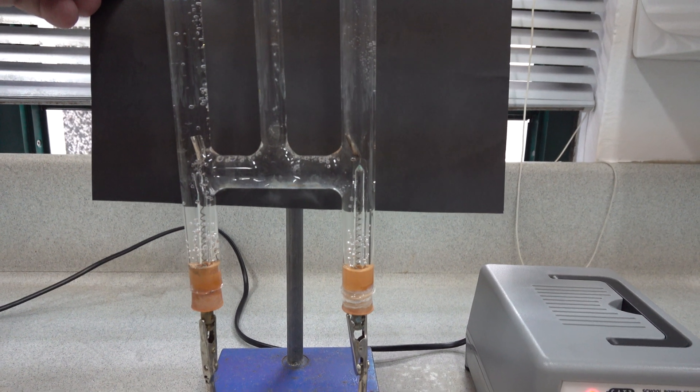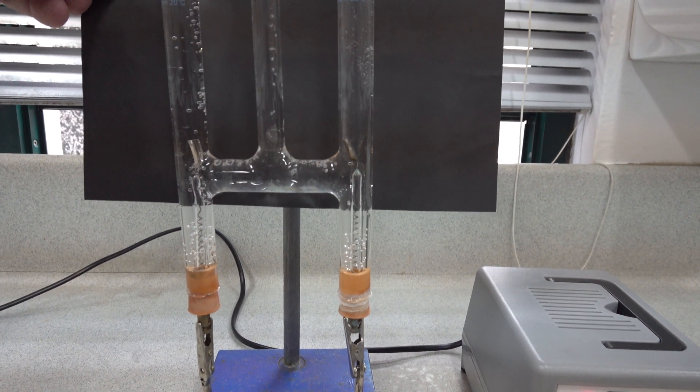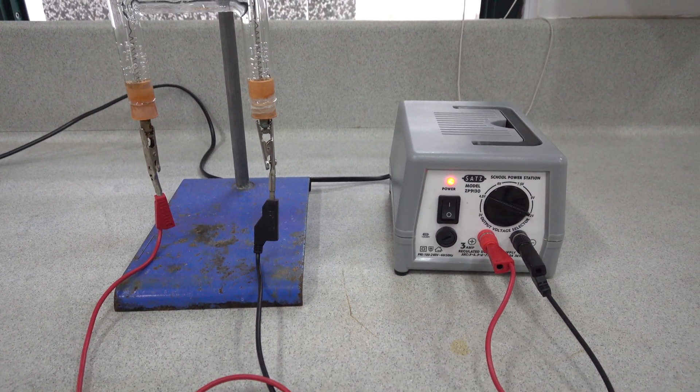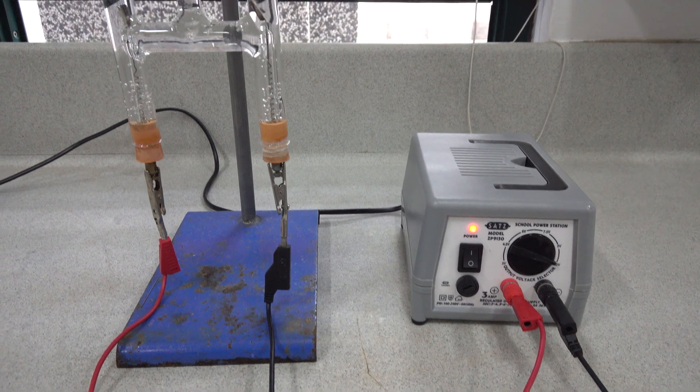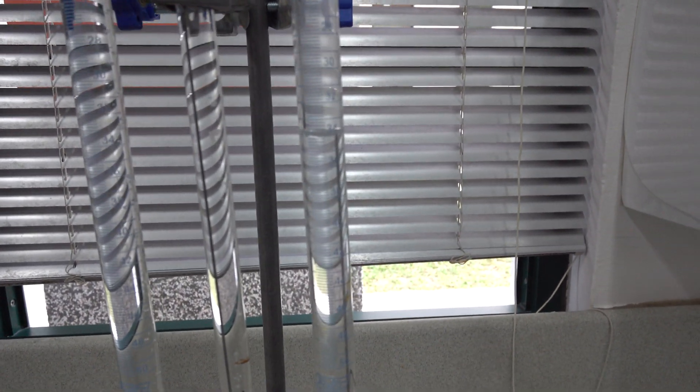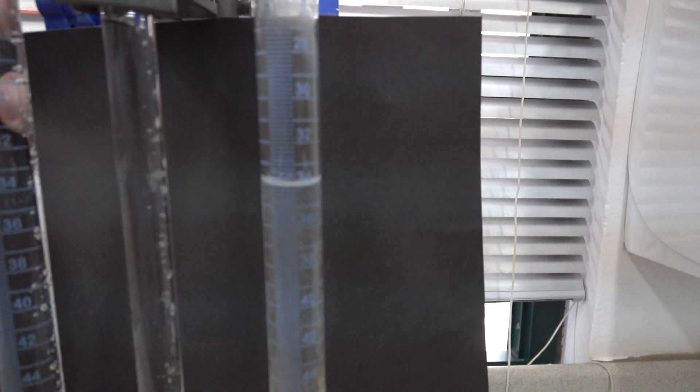We've got the cathode on the right and the anode on the left. In this experiment we're using about 12 volts DC.